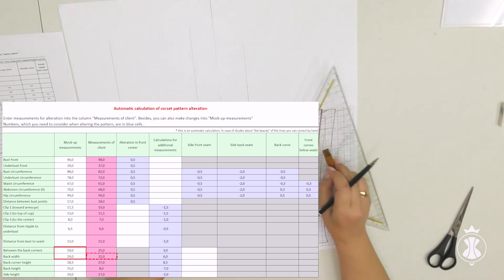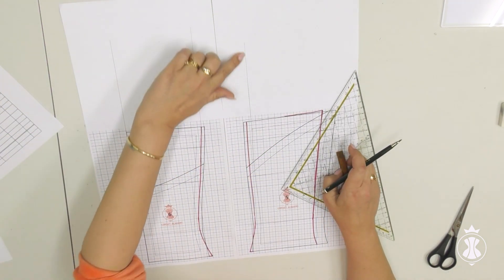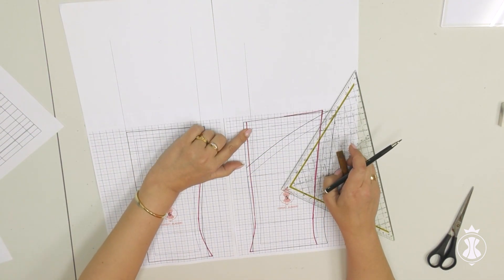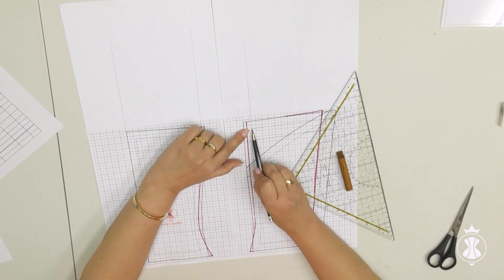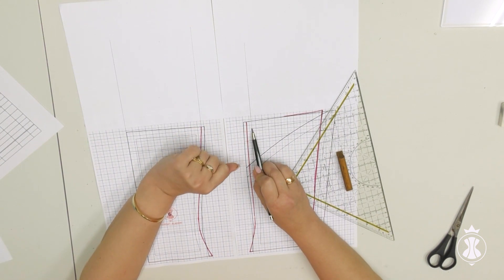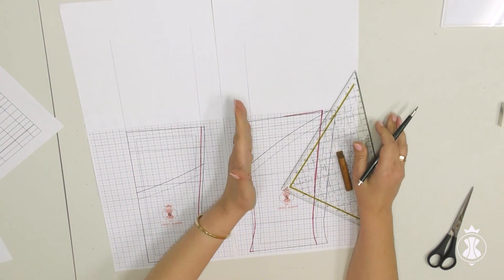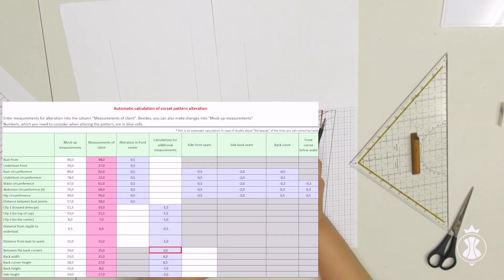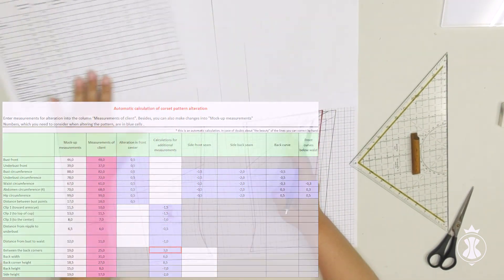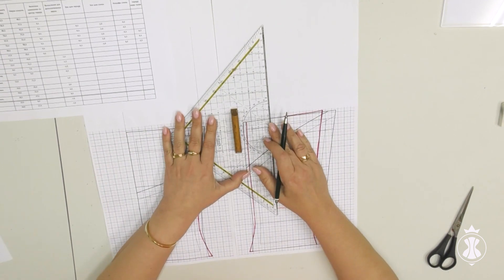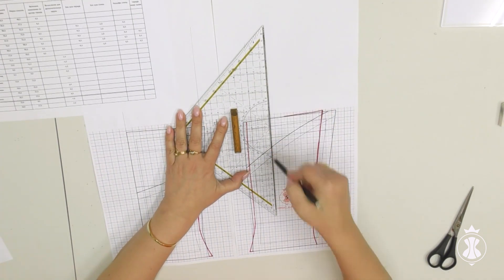Trust it and everything will turn out well. From the line 3 to the right toward the side, I measure the alteration in the measurement between back corners, 3 cm, and draw a parallel vertical line, line 4.